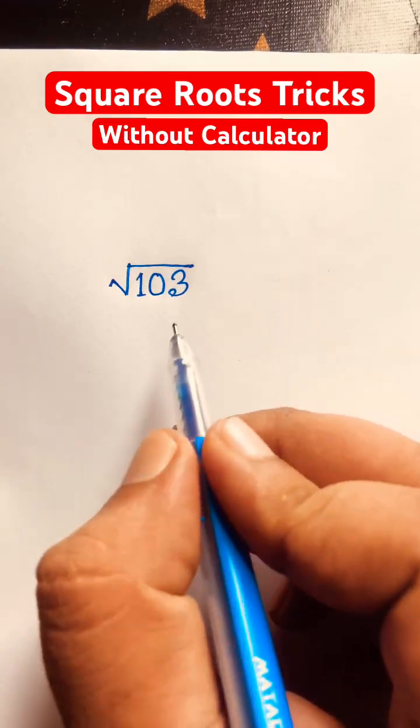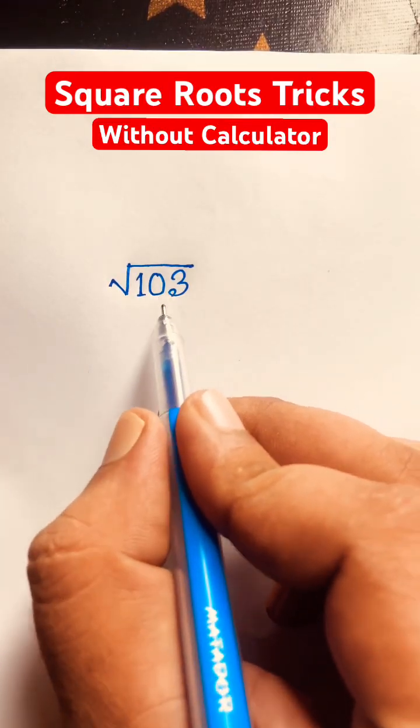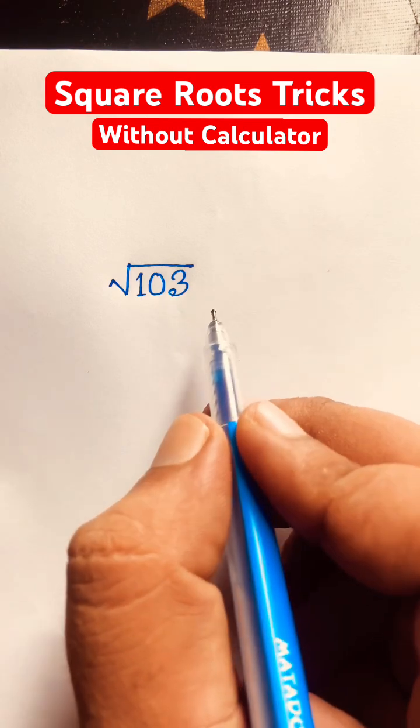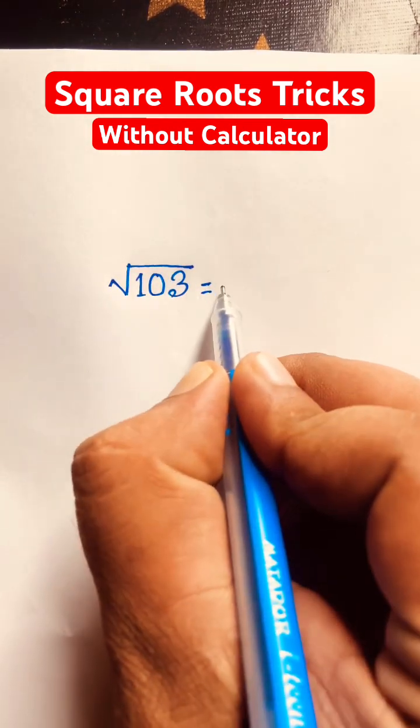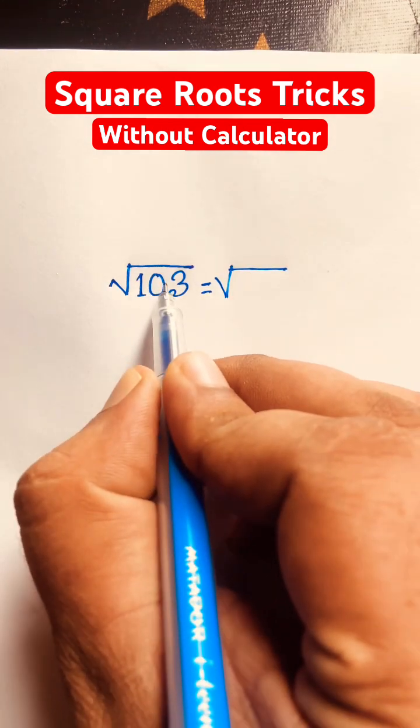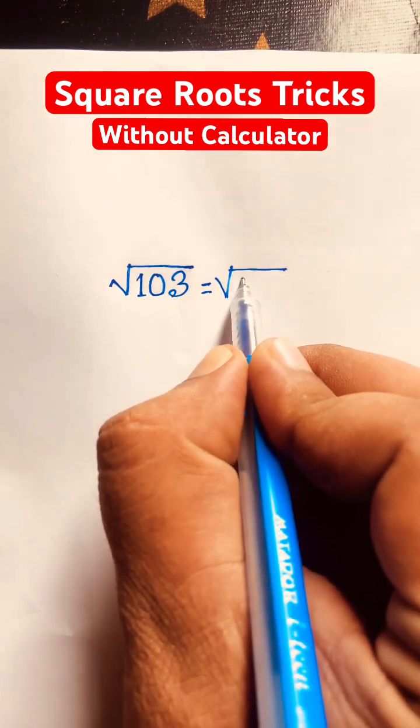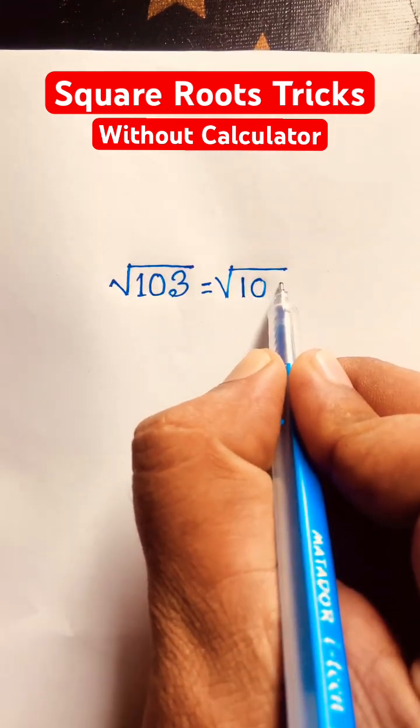Hello everyone, how to solve this question without calculator: square root 103. So first of all, I can say it will be square root... look, 103, so we'll take here the nearest number, it will be 100.